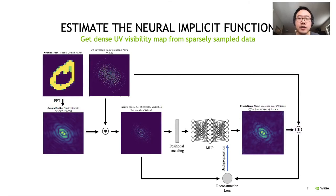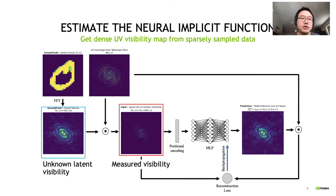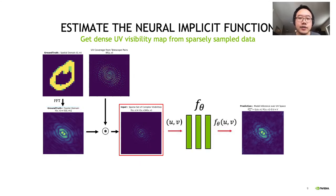Here is a more detailed illustration shown in our pipeline to estimate the neural implicit function. We model the measured visibility as an element-wise dot product between the given UV coverage mask and the unknown latent visibility map. Given the sparsely sampled visibility map, for each visible point in the spectral domain, its UV coordinate is fed as an input into a network. The corresponding complex values visibility is predicted by the network given the UV coordinate and its weights.